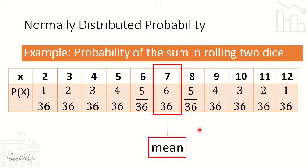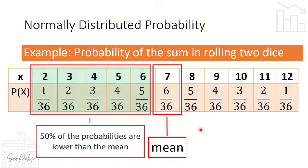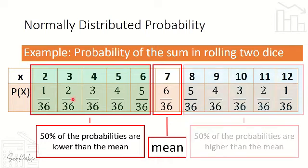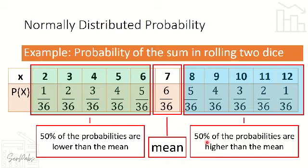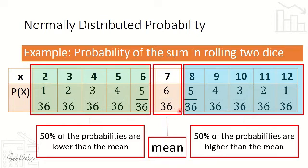So 50% of the probabilities are lower than the mean — those are the sums of 6, 5, 4, 3, and 2 — and 50% of the probabilities are higher than the mean — those are the sums of 8, 9, 10, 11, and 12. Therefore, this probability distribution is a normal distribution: half is above the mean, half is below, and the mean has the highest probability, representing the central peak of the curve.